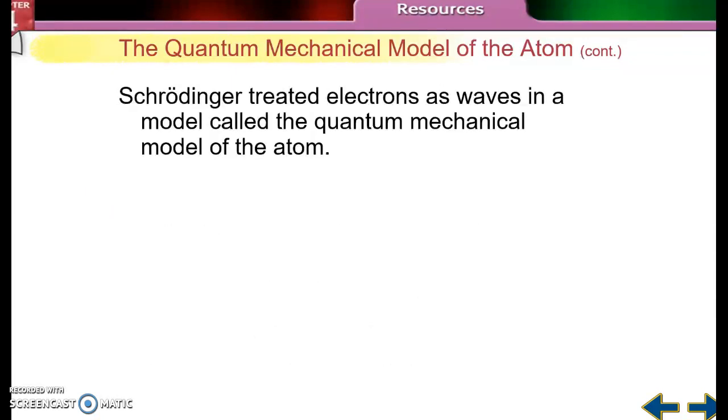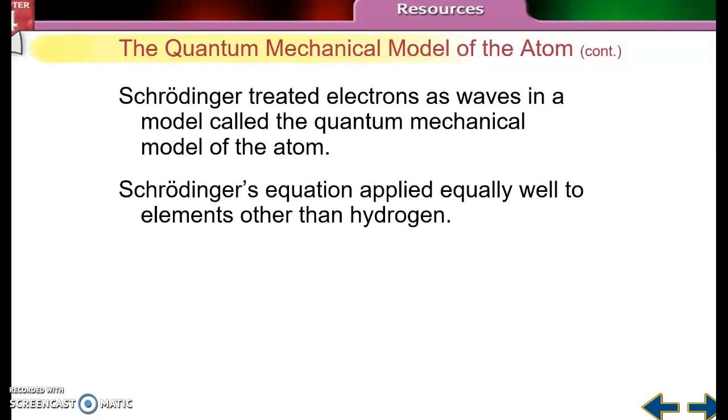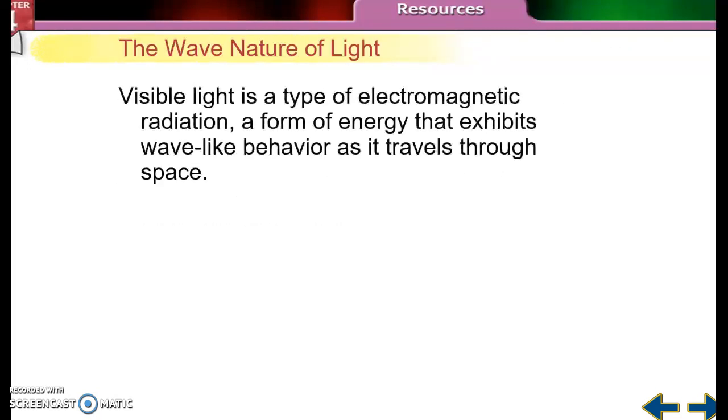Since Schrodinger treated electrons and waves as waves, we're going to call that the quantum mechanical model. This applied to hydrogen and that's what he did his equations on, and we can also apply that to many other elements as well. So that's video 5.1. Thanks so much for your attention.